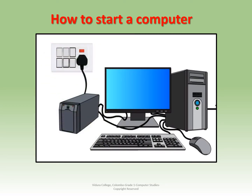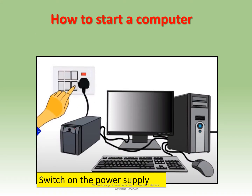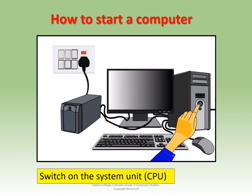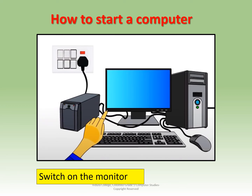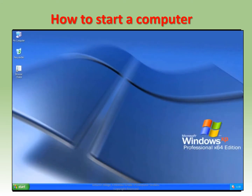We all know that a computer is an electronic device, so it needs electricity to work. Step one: switch on the power supply. Step two: switch on the UPS. UPS is an equipment that keeps the power supply steady and gives power when there is a power failure. Step three: switch on the system unit, also called the CPU. Step four: switch on the monitor. You can see the monitor screen — this entire screen is called the desktop. Now the computer is ready for you to work.